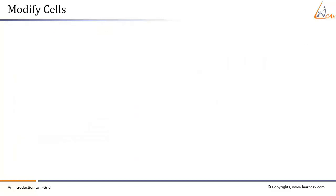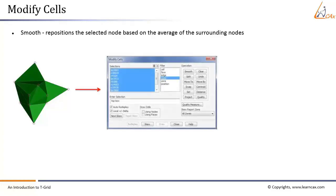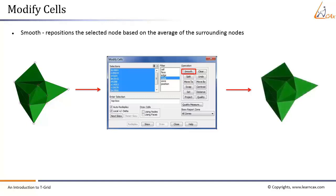To modify the mesh by smoothing nodes: click the Next Skew tab — T-Grid highlights the cell with worst quality skewness in the display window. Select Node in the filter list, then select several nodes surrounding the highlighted cell. Click Smooth in the Operation Group box. T-Grid performs node smoothing to make surrounding cells as uniform in size as possible. The improved quality will be displayed in the terminal. To proceed to the next skewed cell, click Next Skew again and repeat the procedure.